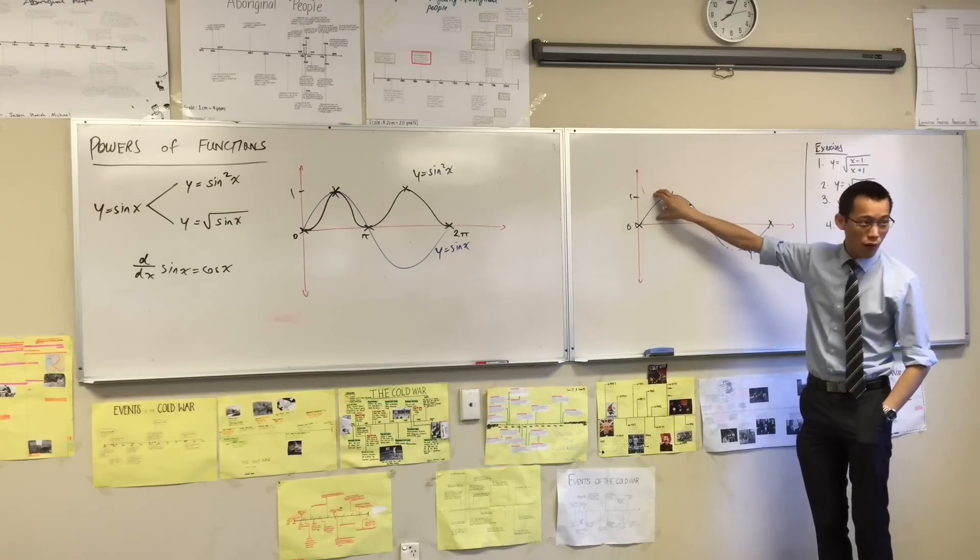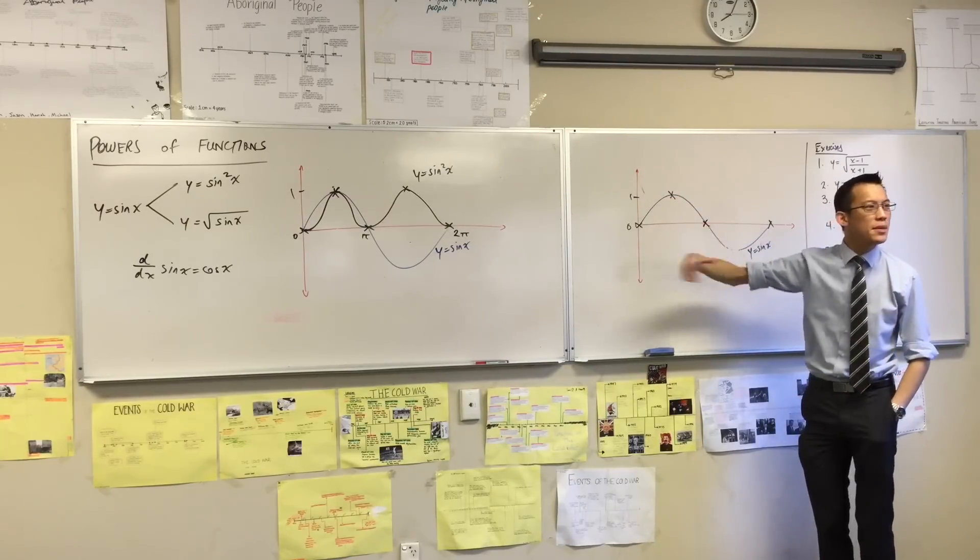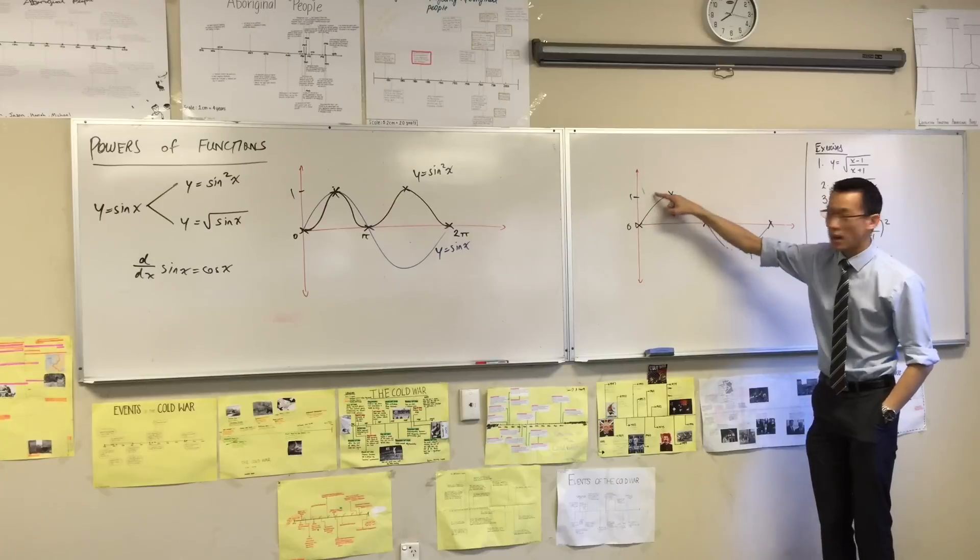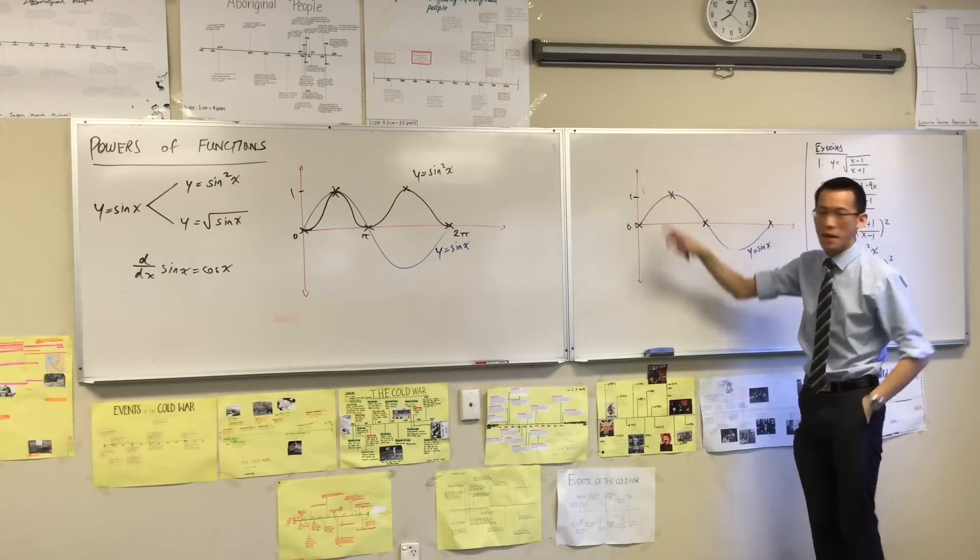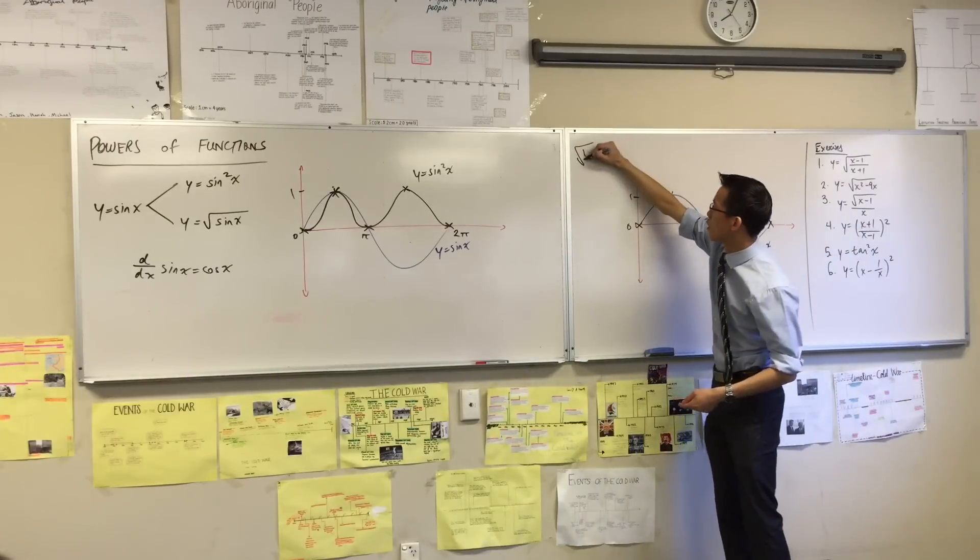And therefore, the number this came from had to be higher. Right? Sorry, it had to be lower, so that's why the square root is going to be higher, right?